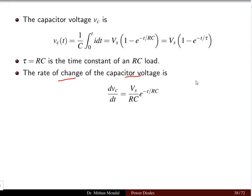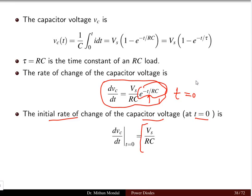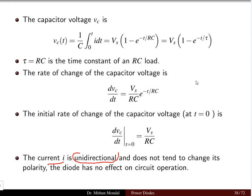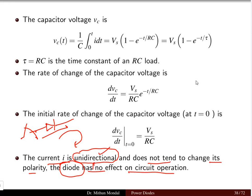The rate of change of the capacitor voltage — taking the derivative with respect to time t — gives (VS/RC) e^(−t/RC), which is again exponentially decreasing with the time constant. At time t=0, this rate of change equals VS/RC. The current is unidirectional because of the diode; current always flows in the same direction from anode to cathode and does not change polarity. Therefore the diode has no effect on the circuit operation — it simply enforces unidirectional current flow.